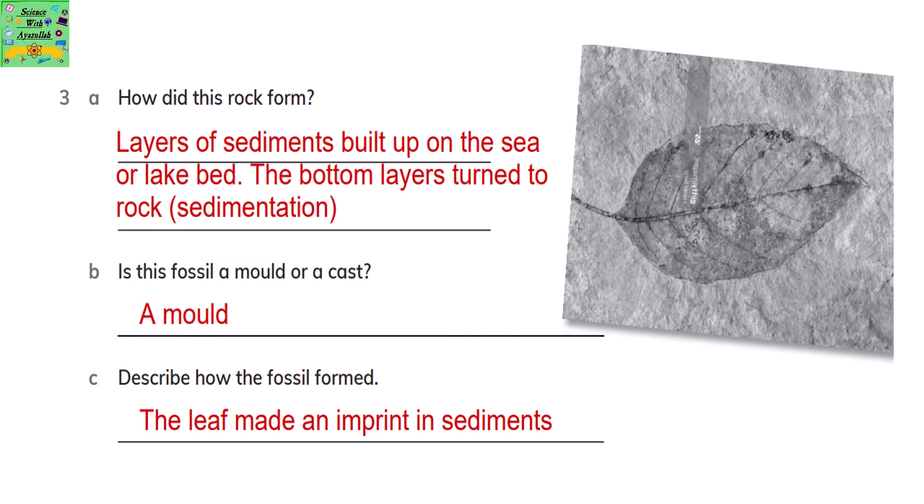How did this rock form? Layers of sediments build up on the sea or lake bed, and the bottom layers turn to rock — that's called sedimentation. Is this fossil a mould or a cast? It's a mould. Describe how the fossil forms. The leaf made an imprint in the sediments.